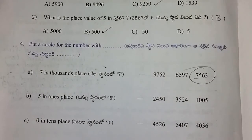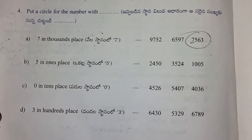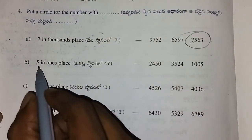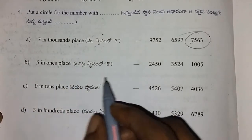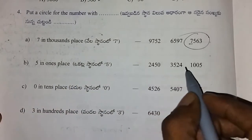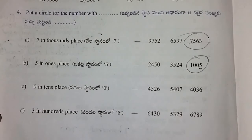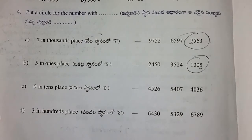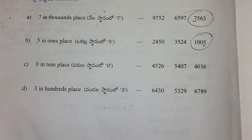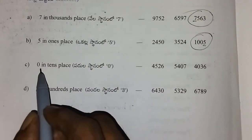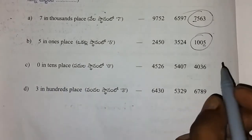Next. The place value of 5 in the ones place — the ones place is the place value of 5. Next. The place value of 0 in the tens place — the tens place is the place value of 0.